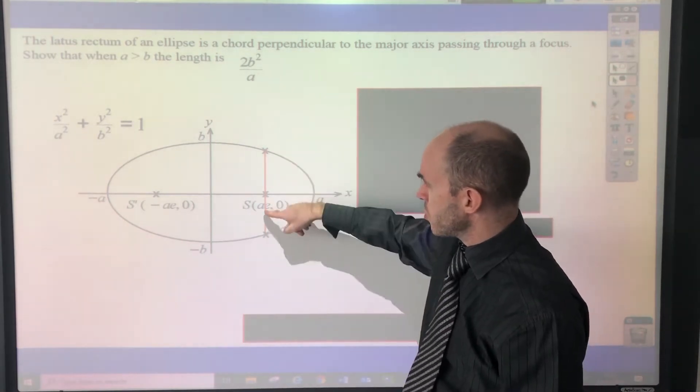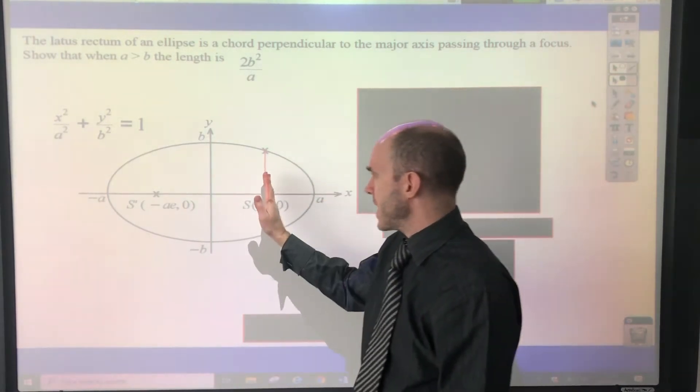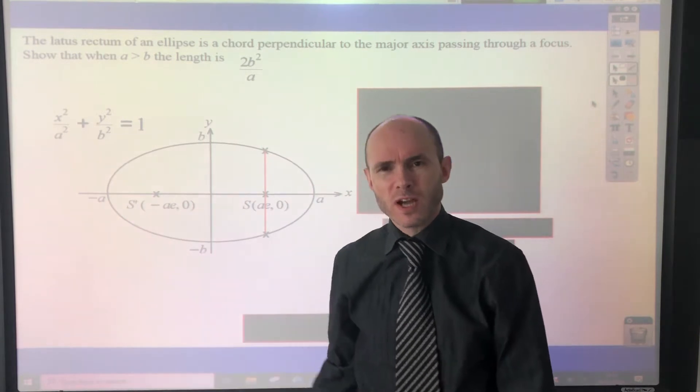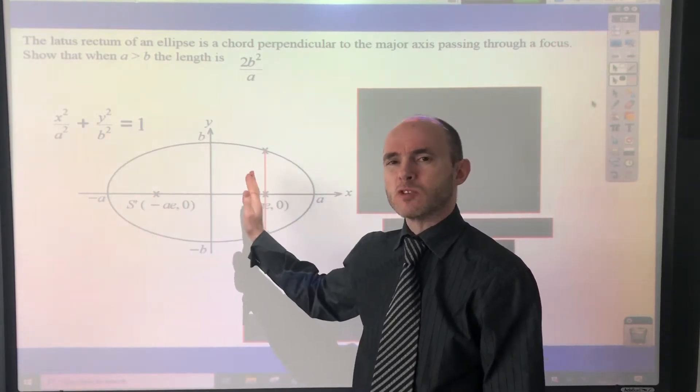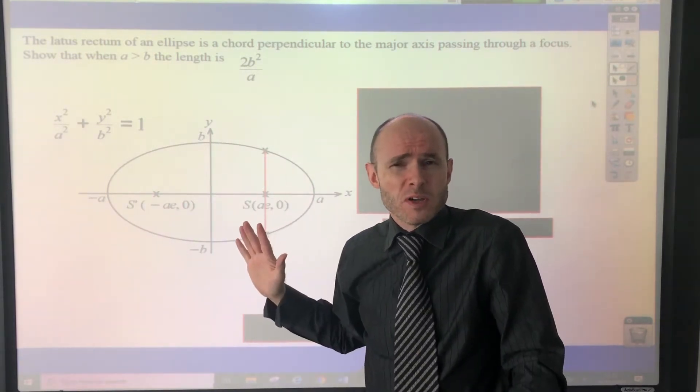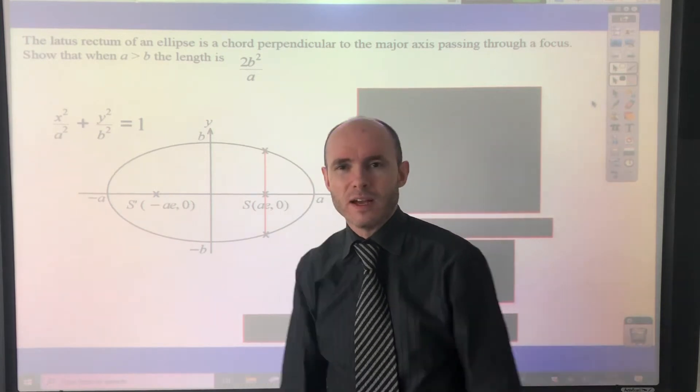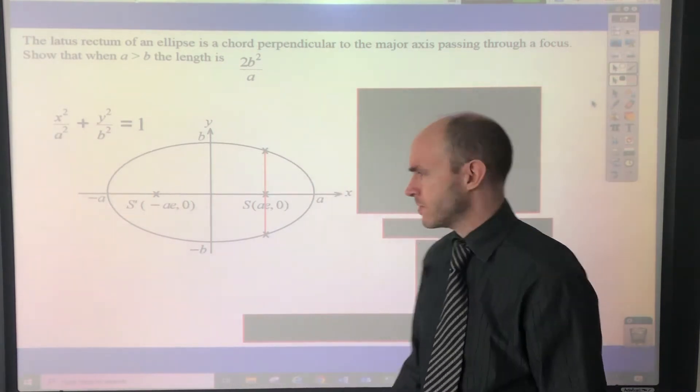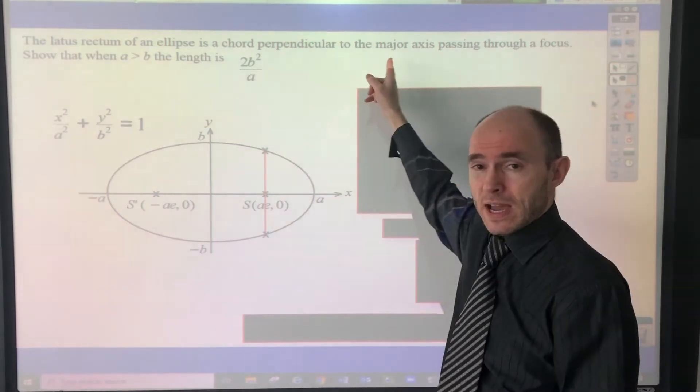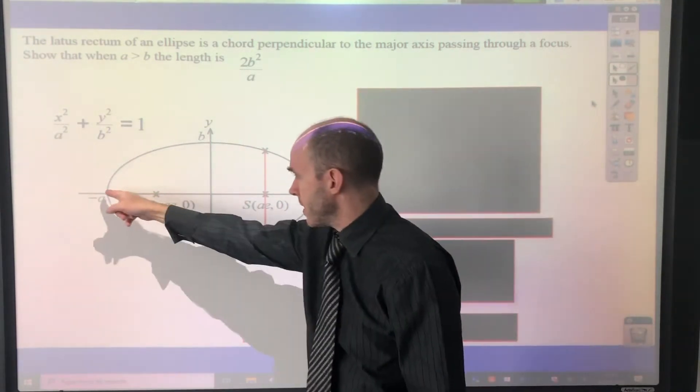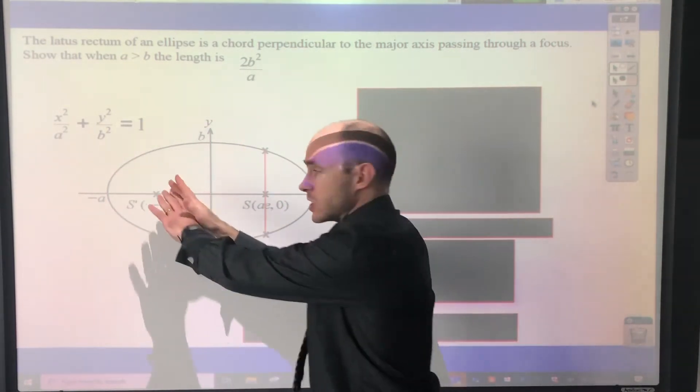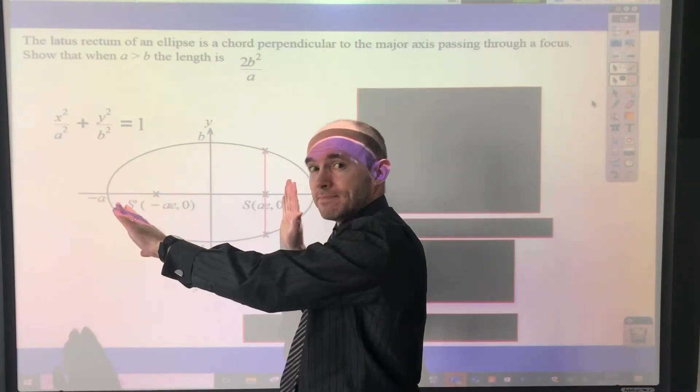And it's passing through one of the focus points. I'll just put it here rather than there because, as I've said so many times, I prefer when as many things are as positive as possible. I'm a positive person. And it also makes it easy when dealing with all the algebra stuff as well. So that's our lattice rectum. So the major axis, remember that's this one, when it's actually stretched out horizontally.